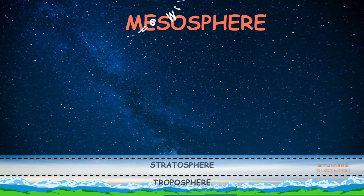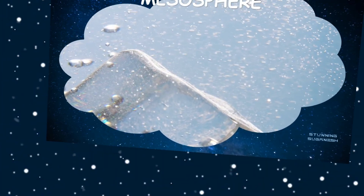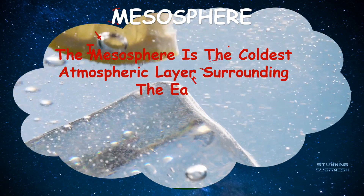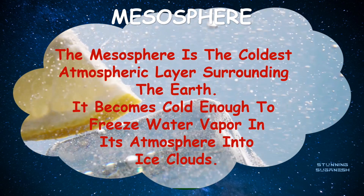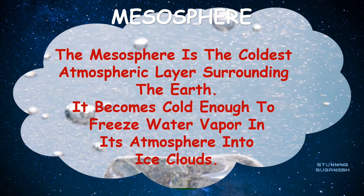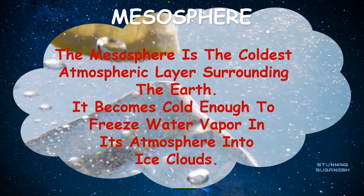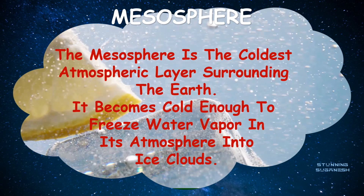The mesosphere is the third layer of Earth's atmosphere. It extends from about 50 to 85 kilometers above our planet. The mesosphere is the coldest atmospheric layer surrounding the Earth, and it becomes cold enough to freeze water vapor into ice clouds.